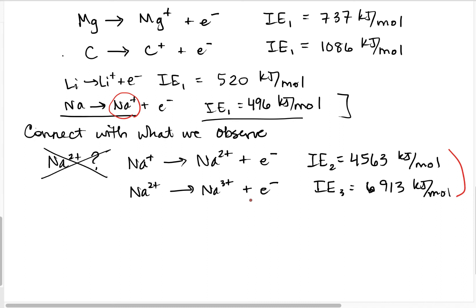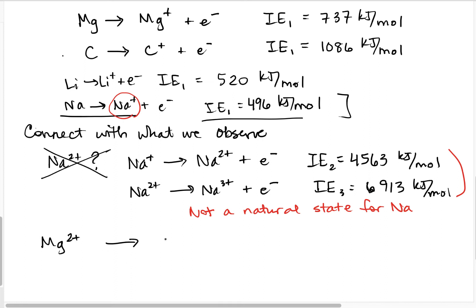They cost too much energy. You could do it if you really wanted to, but you'd have to put in so much energy that these are not natural states. We find Mg²⁺, but what about Mg³⁺? That third ionization energy costs even more than making Na³⁺, so this does not happen. The ions that form generally do so because they are not too energetically costly.